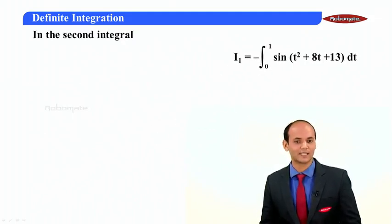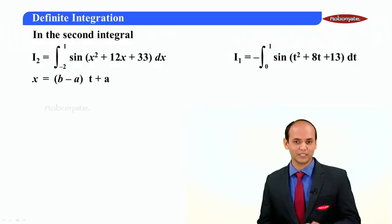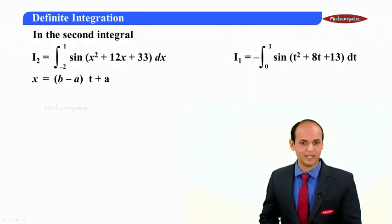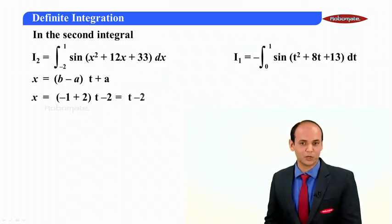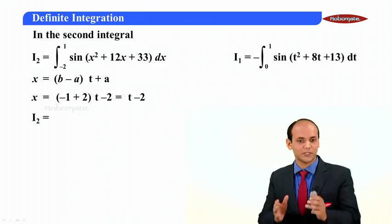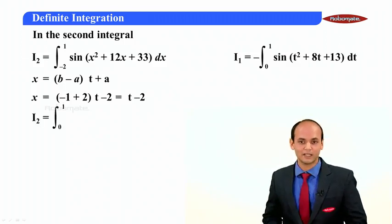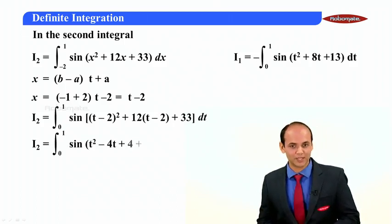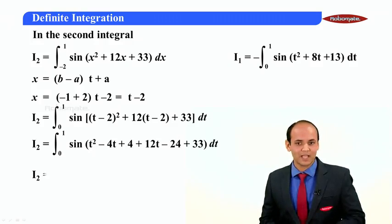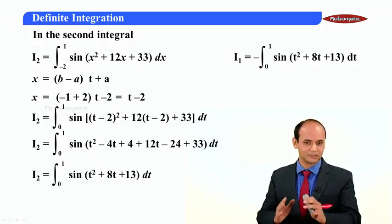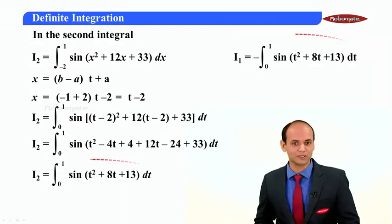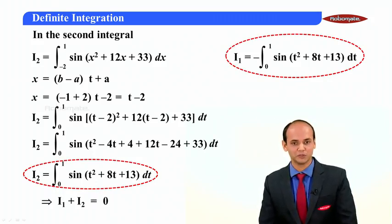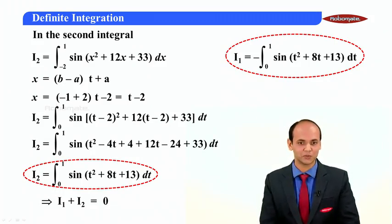For I2, with limits from minus 2 to 1, applying x = (b − a)t + a gives x = t − 2. Substituting into I2 and simplifying, we obtain I2 = integral from 0 to 1 of the corresponding sine expression. Comparing I1 and I2, they are of opposite sign, so I1 + I2 = 0. Thank you.